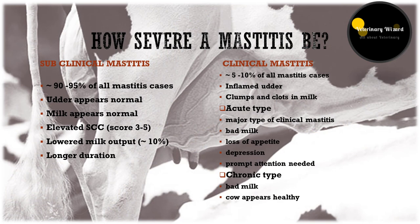There are two types of mastitis: sub-clinical and clinical. About 90 to 95 percent of cases are sub-clinical mastitis, while five to ten percent are clinical. In sub-clinical mastitis, the udder and milk both appear normal but production is decreased with elevated somatic cell count. In clinical mastitis there will be an inflamed udder with clumps and clots in milk. Clinical mastitis has two forms — acute and chronic. The acute form presents with bad milk, loss of appetite, and depression, requiring prompt action. In chronic form, the cow appears healthy but there will be bad milk.